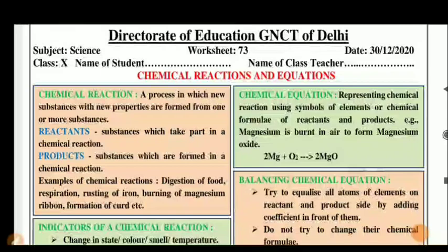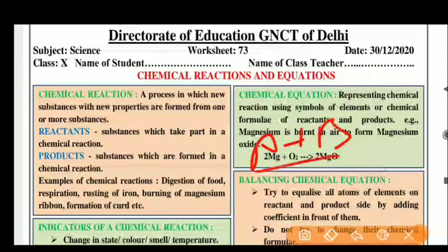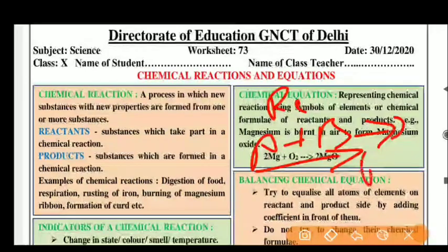Let's start with chemical reactions and equations. A chemical reaction is a process in which new substances with new properties are formed from one or more substances. When we talk about chemical reactions, we write something like A plus B — we call it reactants. And when we form C plus D, we call it products. The substance which takes part in a chemical reaction is the reactant. The substance which is formed in the chemical reaction is called the product.